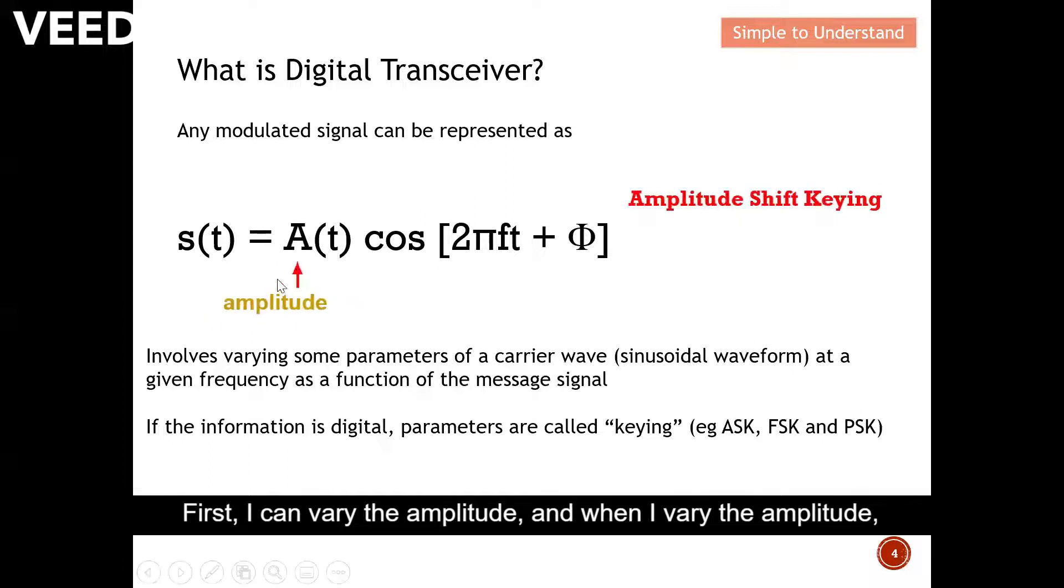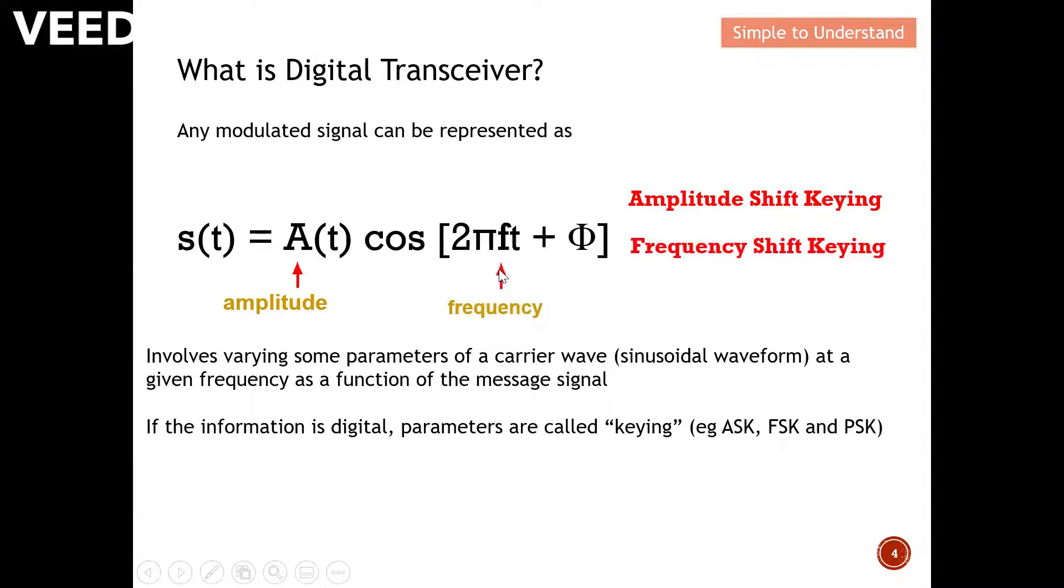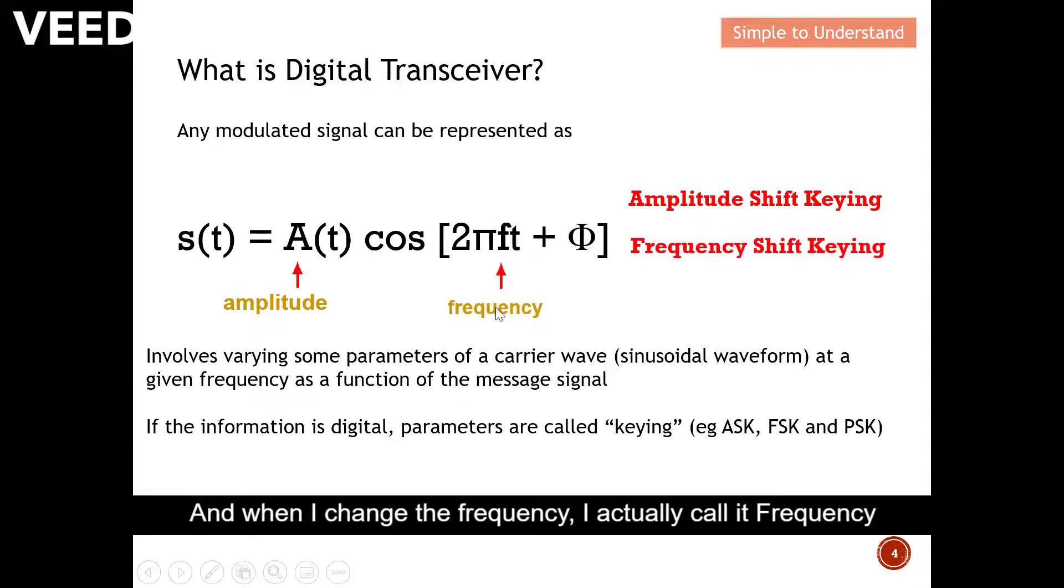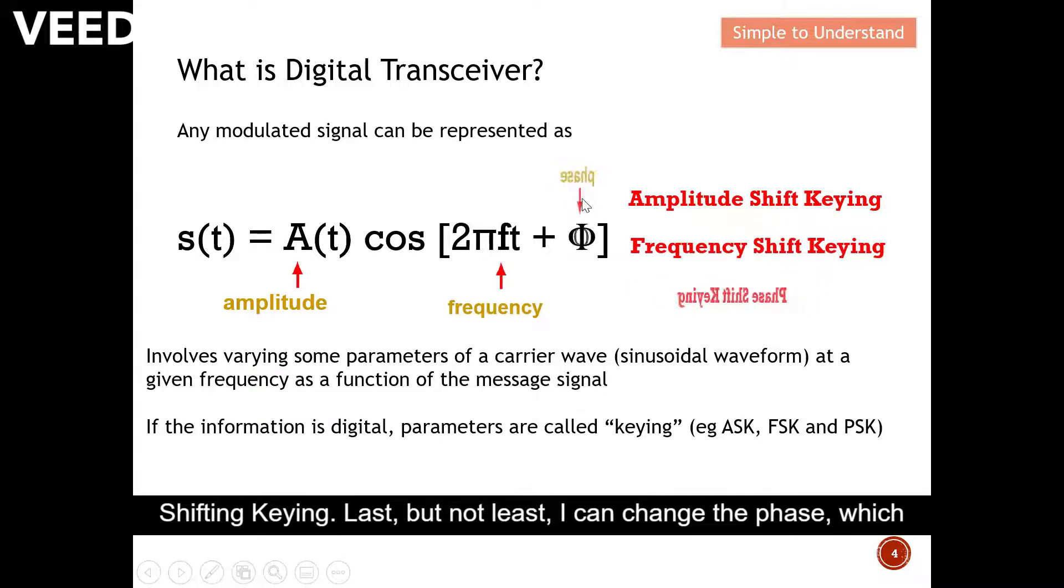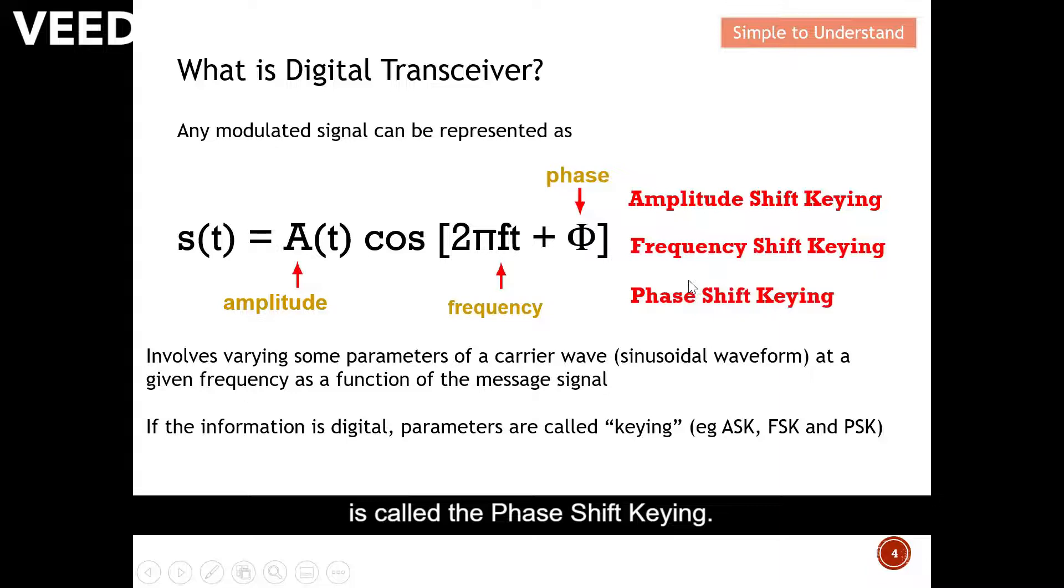First, I can vary the amplitude, and when I vary the amplitude, it's called amplitude shift keying. And I also can vary the frequency according to the message. And when I change the frequency, I actually call it frequency shift keying. Last but not least, I can change the phase, which is called the phase shift keying. On the next three slides, I'm going to explain what are all these three different types of shift keying.